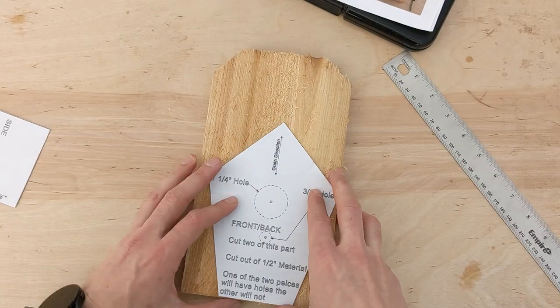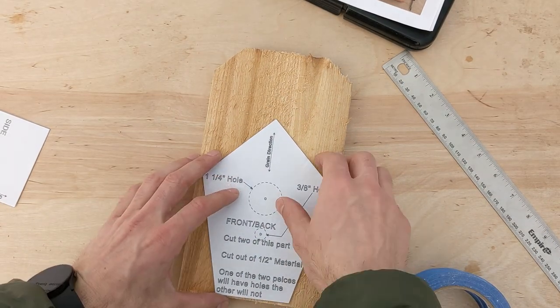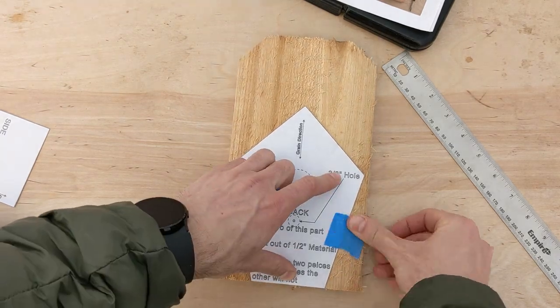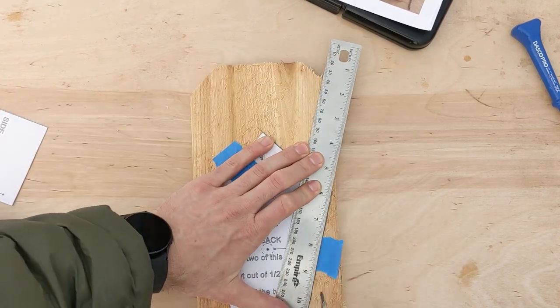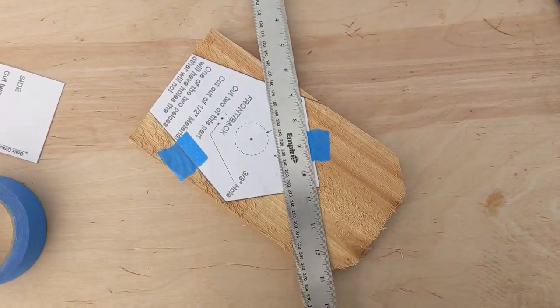For the front and back pieces, line them up with the end of the workpiece and then tape them. Using an awl, center punch bolt holes. Use the center punches to drill the holes. Draw in your profile lines.